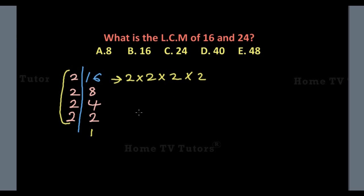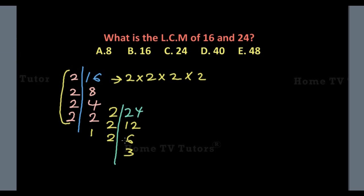Next, we look for the product of factors of 24. We divide by the first prime number, 2. 2 into 24 gives us 12. 2 into 12 gives us 6. 2 into 6 gives us 3. 2 can no longer divide 3 without remainder, so we divide by the next prime number, 3. 3 into 3 gives us 1. The product of factors of 24 are 2 times 2 times 2 times 3.